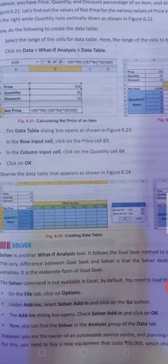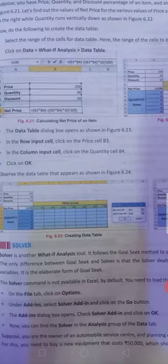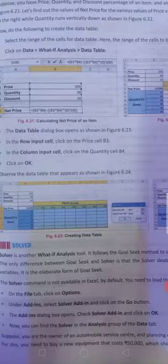How to add? On the file tab, click on options. Under add-ins, select solver add-in, click go button. The add-ins dialog box opens. Click on solver add, check it. And now find solver in analysis group of data tab.